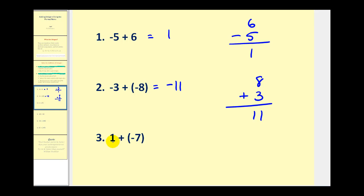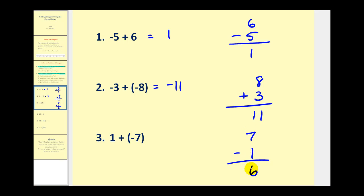On number three, we have different signs — one's positive and one's negative — so we take the absolute value of both and then subtract the smaller from the larger. The absolute value of one is one, and the absolute value of negative seven is seven. We subtract because the original integers had different signs — seven minus one is six. However, since seven was the larger number and its original sign was negative, our sum will be negative six.